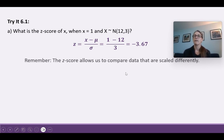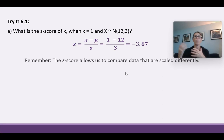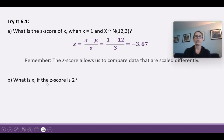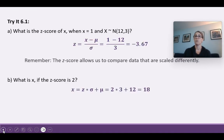Z-scores help us compare things scaled differently. If we have two distributions with different means and standard deviations, converting both to z-scores lets us compare them meaningfully. If we know the z-score is 2 (using the distribution with mean 12 and standard deviation 3), we work backward: x = 2 × 3 + 12 = 18. So the data value is 18.